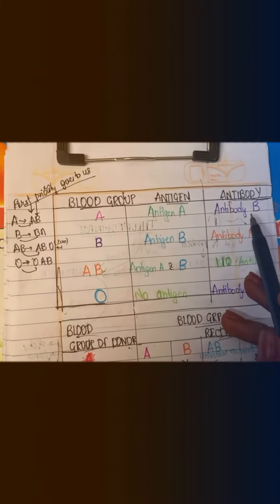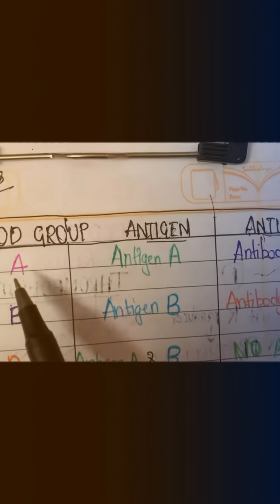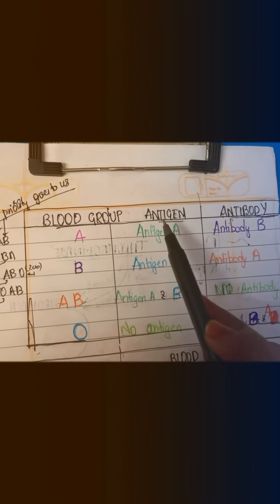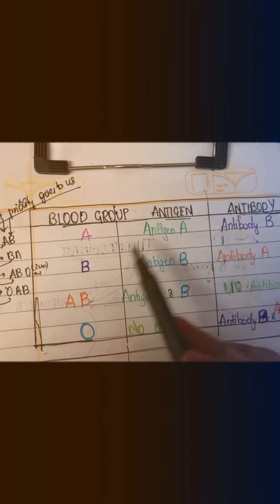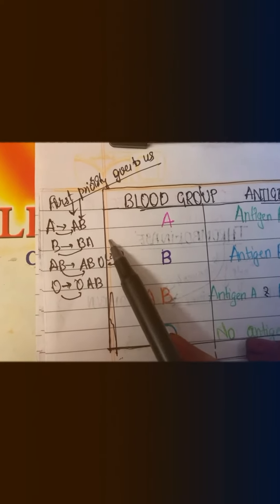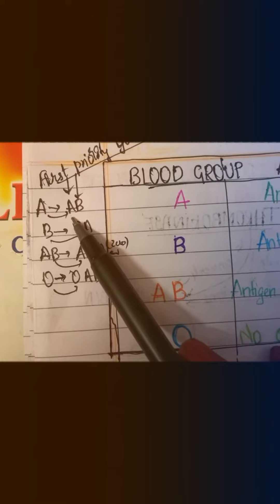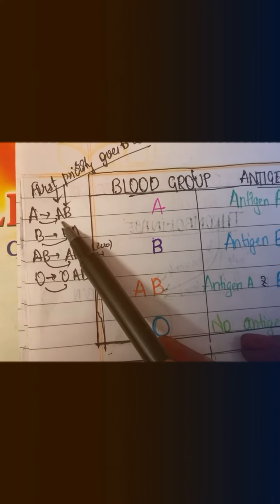First, blood group A has antigen A and antibody B. Just remember that it will give priority to itself — A first, then B. So the antigen is A and antibody is B.